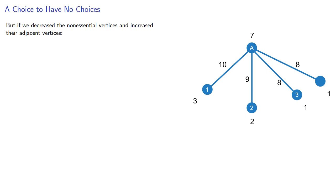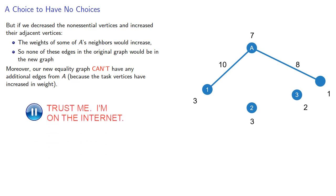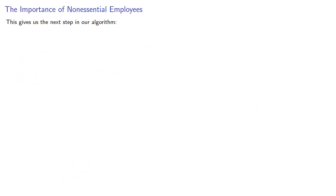On the other hand, if we decrease the non-essential vertices and increase their adjacent vertices, the weights of some of A's neighbors would increase. So none of these edges in the original graph would be in the new graph. Moreover, our new equality graph can't have any additional edges from A because the task vertices have increased in weight.